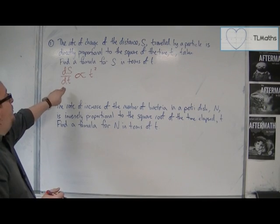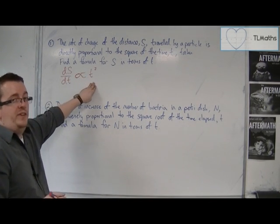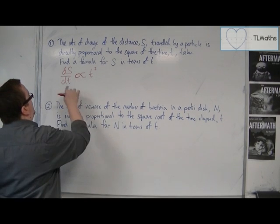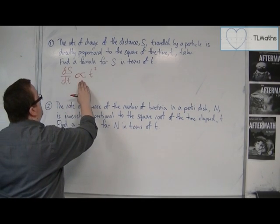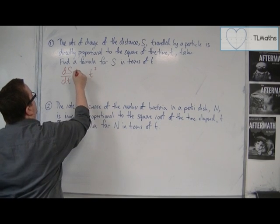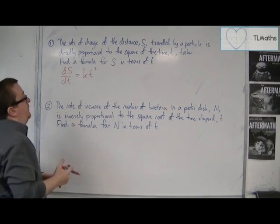Because we're saying that ds/dt is proportional to t squared, that means ds/dt is some multiple of t squared. So we could write that as k times t squared.